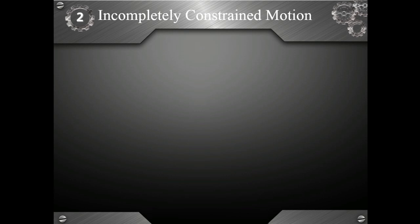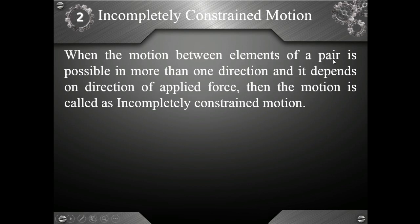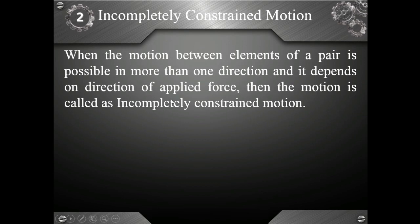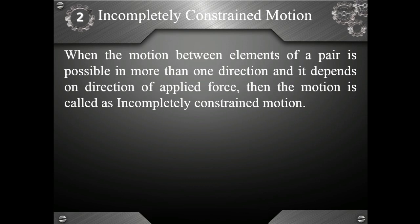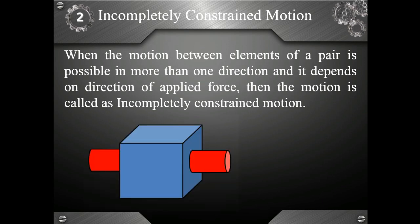Now, the second type is incompletely constrained motion. As per the definition, when the motion between elements of a pair is possible in more than one direction and it depends on the direction of applied force, then the motion is called incompletely constrained motion. The most important part of this definition is that motion must be possible in more than one direction, and the direction of that motion depends on the direction of applied force.